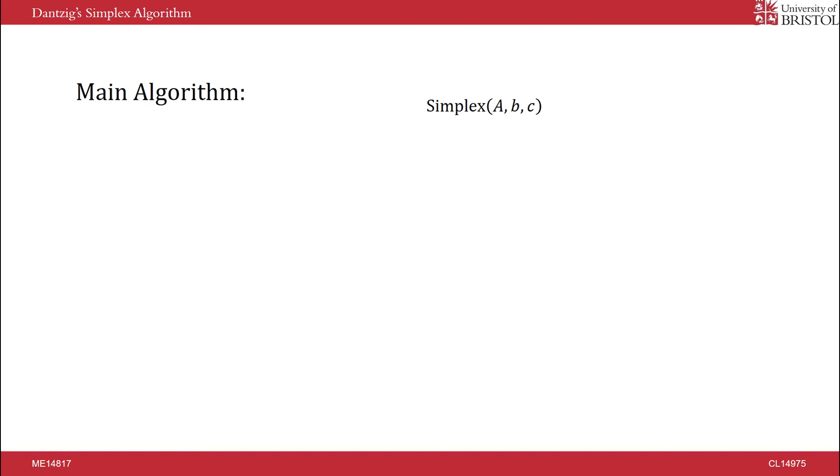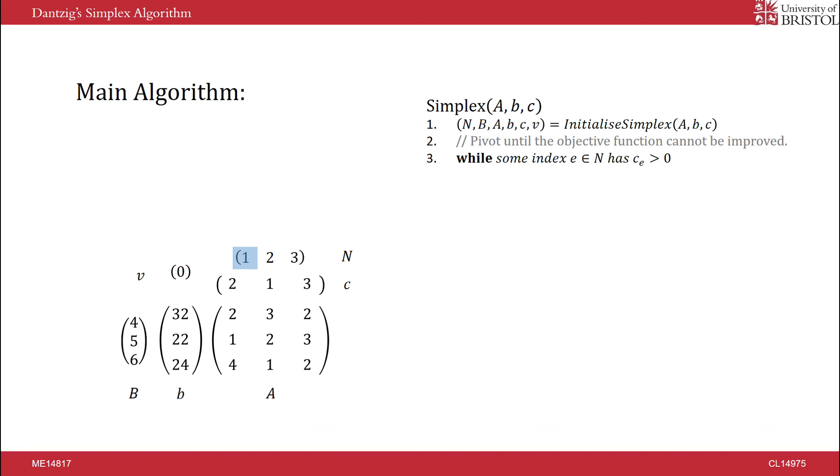Here is the pseudocode for the main algorithm. We call initialized simplex which returns a slack form representation of the standard form linear program. The main while loop loops until all coefficients in the objective function are less than or equal to 0. This indicates that the objective function cannot be optimized further.